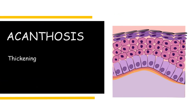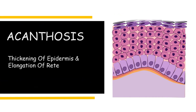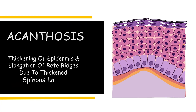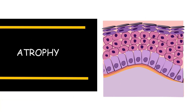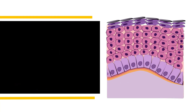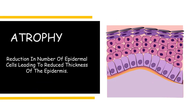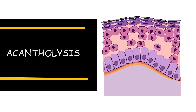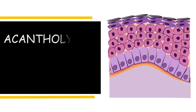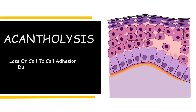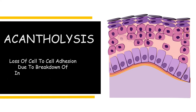Acanthosis is thickening of the epidermis and elongation of rete ridges due to thickening of the spinous cell layer. Atrophy is a reduction in the number of epidermal cells leading to reduced thickness of the epidermis. Acantholysis is loss of cell-to-cell adhesion due to breakdown of the intercellular connections.